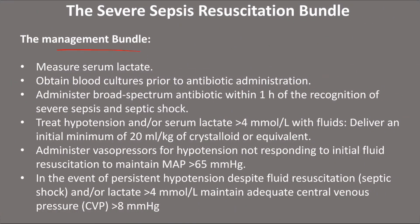For the resuscitation bundle: measure serum lactate and take blood cultures prior to antibiotic. Broad-spectrum antibiotics should be given within the first hour of recognition of severe sepsis — if blood culture delays treatment, start antibiotics as soon as possible. Treat hypotension or serum lactate more than 4 with fluids — deliver an initial 20 ml/kg of crystalloid or equivalent. If the patient is not responding to fluids, add vasopressors, especially noradrenaline. In the event of persistent hypotension despite resuscitation, maintain adequate central venous pressure above 8.